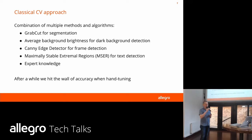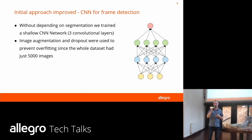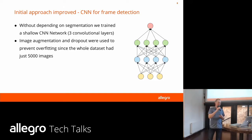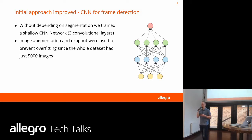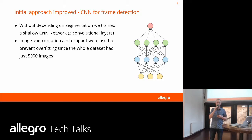So we decided to go for a machine learning solution. Our initial approach was to tackle the frame aspect, and we trained a three-layered convolutional neural network to detect those. Since our original dataset had only 5,000 samples — quite small for a network like this — we heavily used regularization techniques like image augmentation and dropout to train the model.